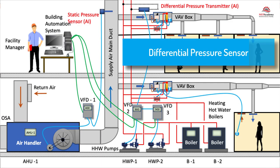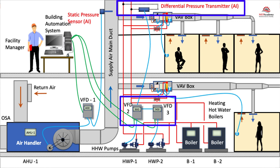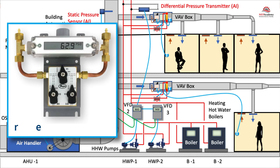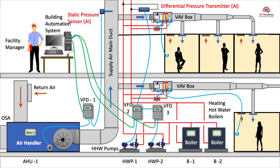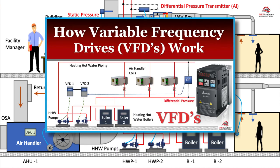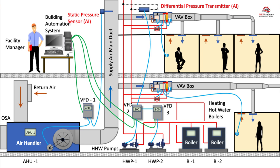Differential pressure sensor. Differential pressure sensors, in combination with variable frequency drives (VFDs), can be used to control the speed of pumps in a system. Differential pressure sensors are installed in the system to measure the pressure difference between two points, typically just before the most remote coil in the system. The sensor measures the difference in pressure across a flow element such as an orifice plate or a flow sensor. The differential pressure sensor provides a feedback signal to the control system indicating the actual pressure differential. A desired target differential pressure set point is established based on the system requirements and design parameters. The control logic compares the actual differential pressure feedback signal with the set point.